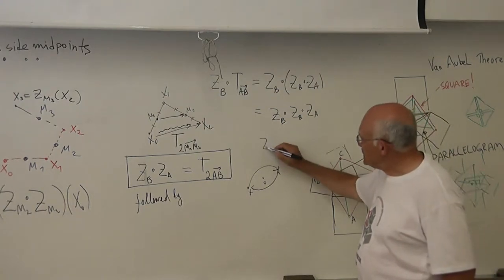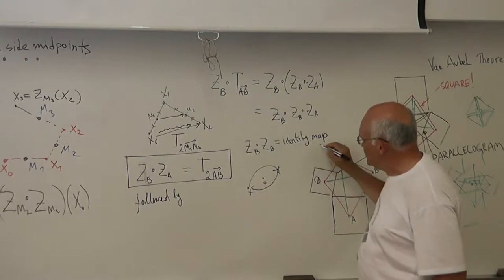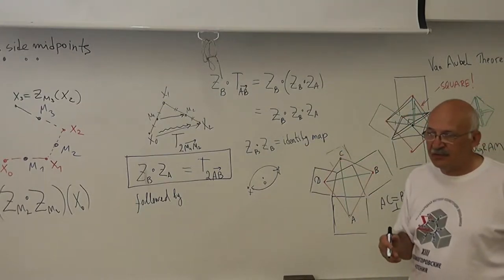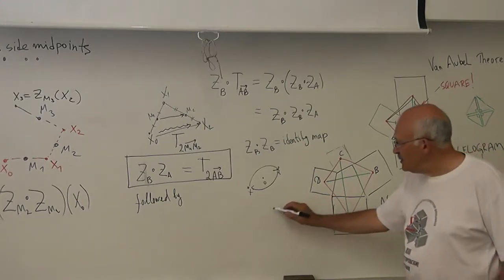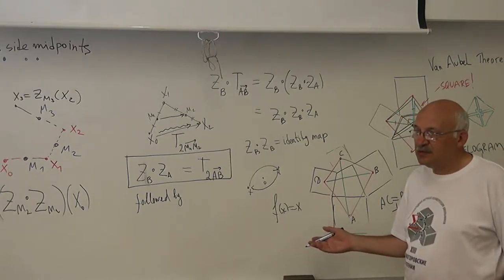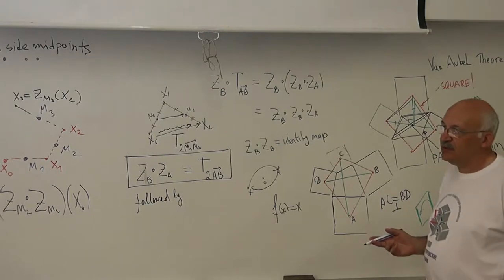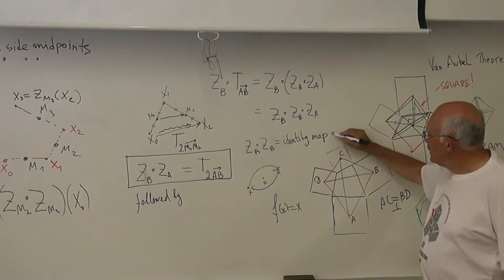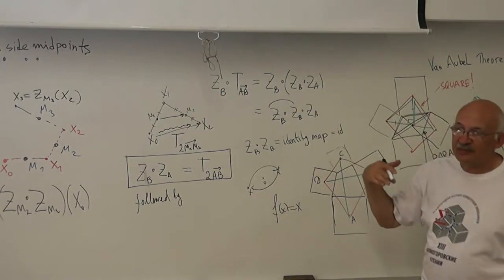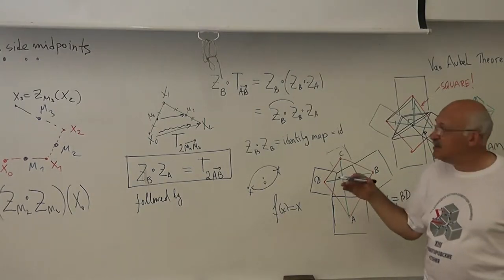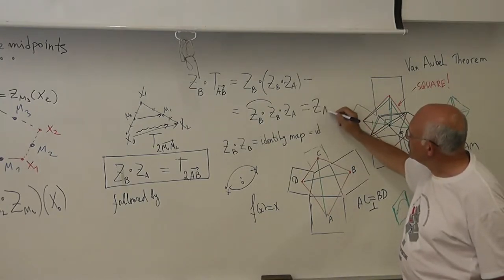Yes. The point returns to its original position. So, we say that ZB followed by ZB is identity. The identity map. The identity map. So this is in fact just ZA. Okay?